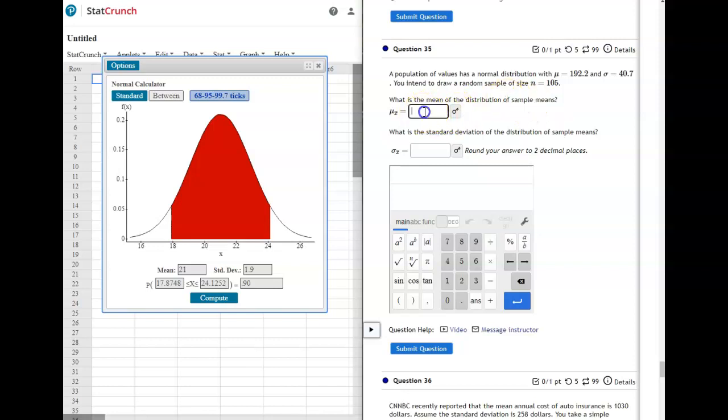Now for that, your mean is still just whatever they give you as the mean, but your standard deviation is not 40.7. To get the new standard deviation, you do 40.7 divided by the square root of n, your sample size.